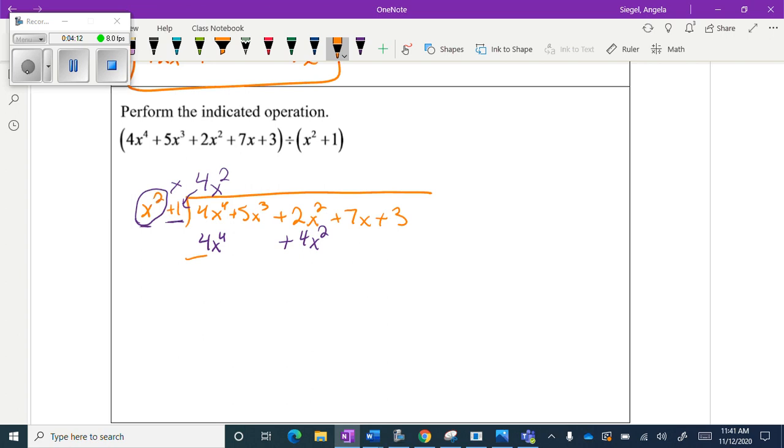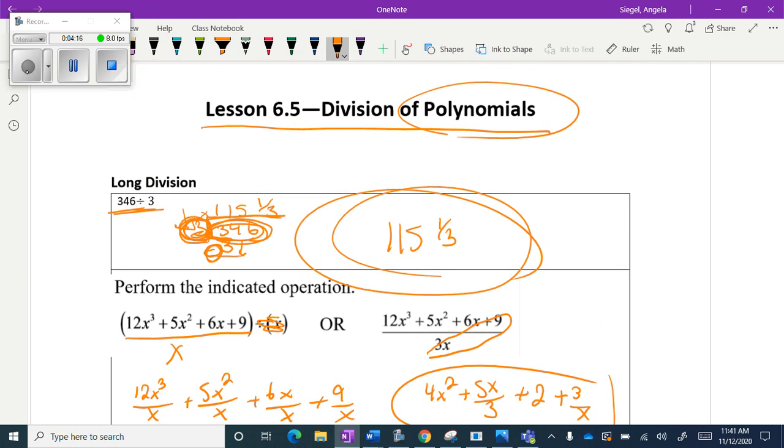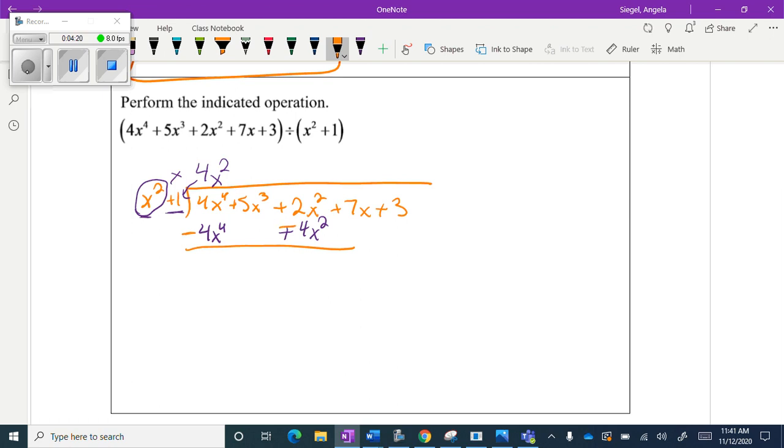So my next step is up here. Remember what I said? We're going to subtract what we got. So I'm going to subtract these two and I get 5x³ minus 2x² plus 7x plus 3. And I'm going to repeat that same process. So I have x² and I have 5x³. So I'm missing a 5 and an x. So when I multiply 5x times x², I get 5x³ and then plus 5x when I multiply it times the 1. So I'm going to put that down here. I'm going to do the same thing. So I'm going to subtract my answer and I get negative 2x² plus 2x plus 3.